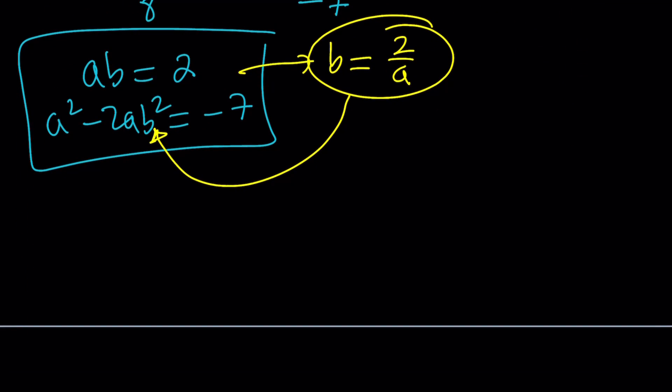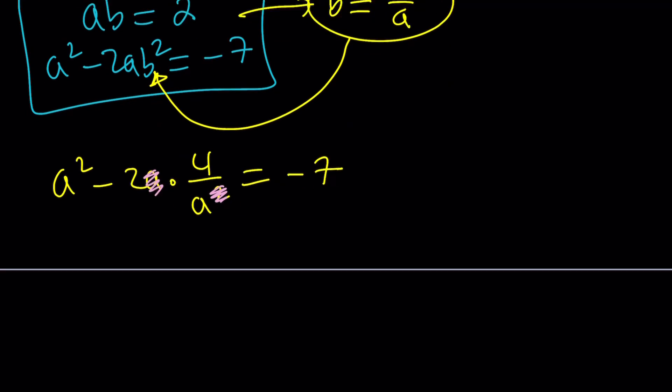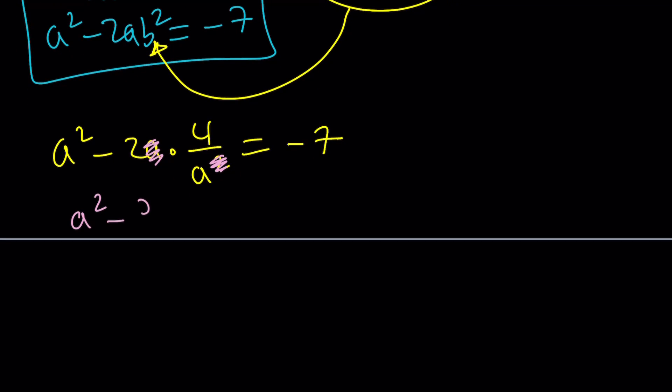Isolating b is somewhat better because we only have one b in the second equation. So, a squared minus 2a times b squared. b squared is going to be 4 over a squared, which is going to simplify. We can cancel out one of these with this.